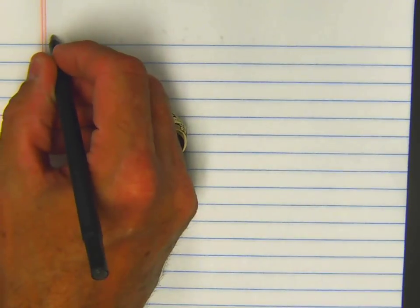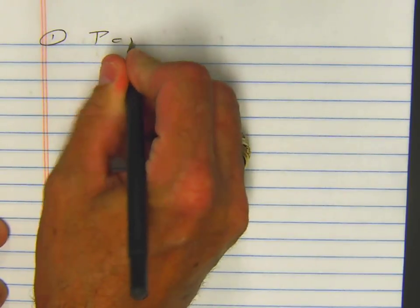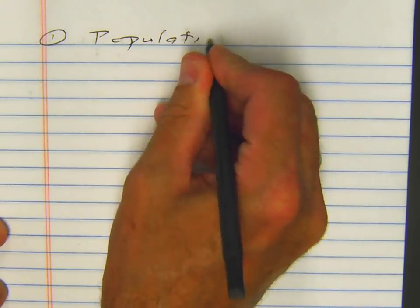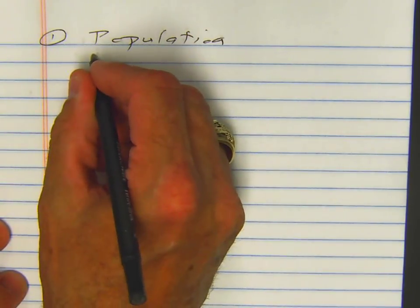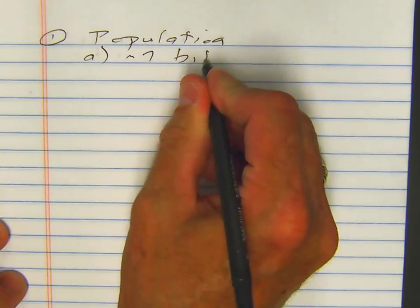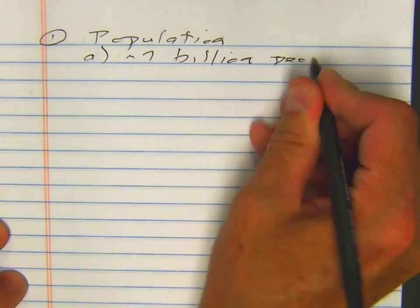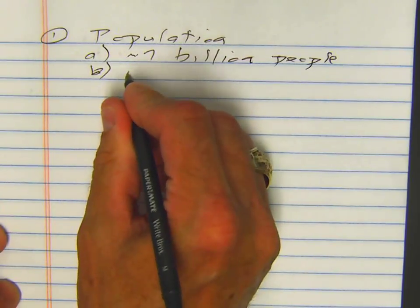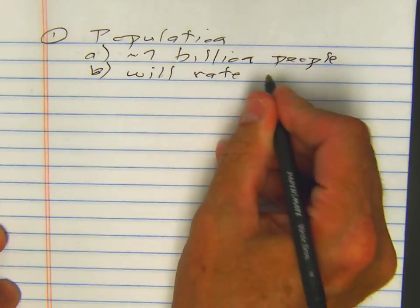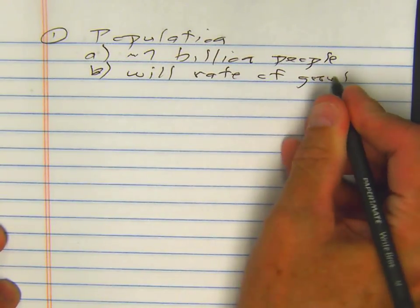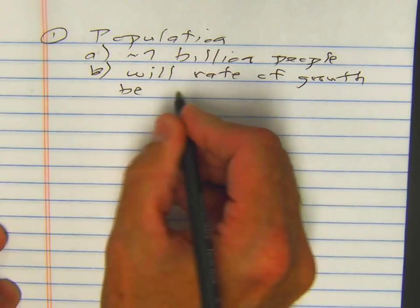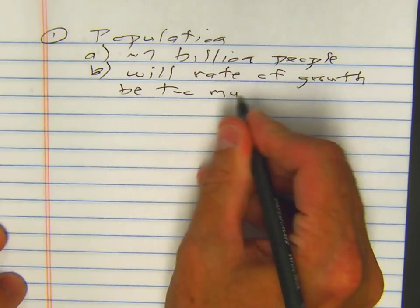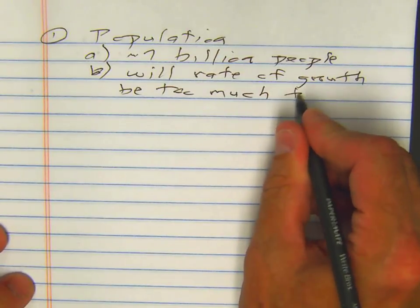Looking at human population, I want to put down a few key terms here and then we'll discuss more in class to lay a little bit of a foundation. The population of this world is now approximately around 7 billion people. The important question is: will the rate of growth be too much for us to handle from a resource standpoint?